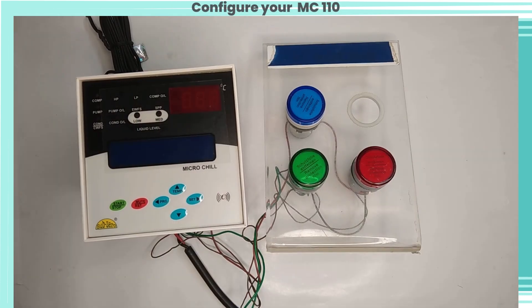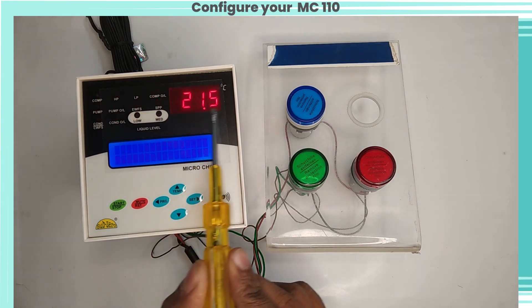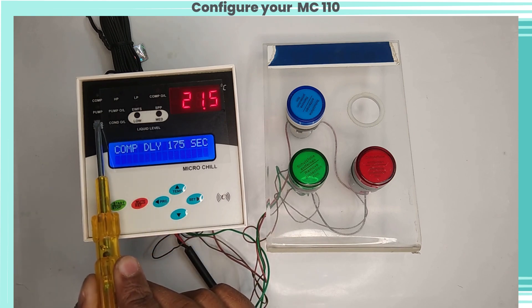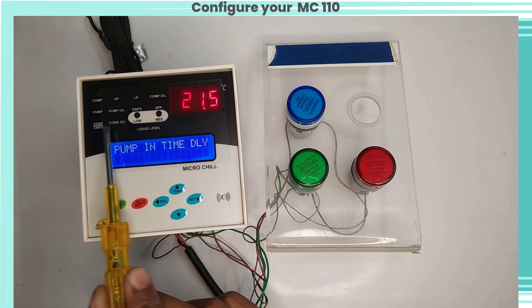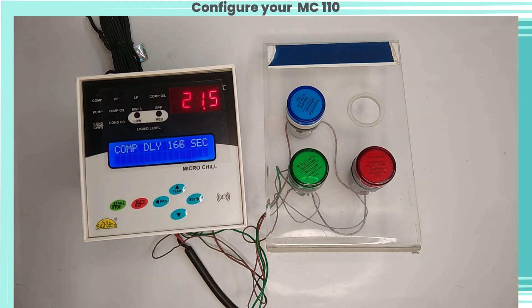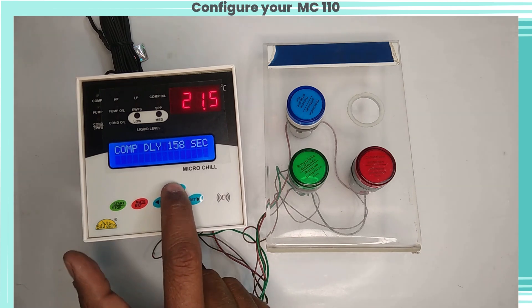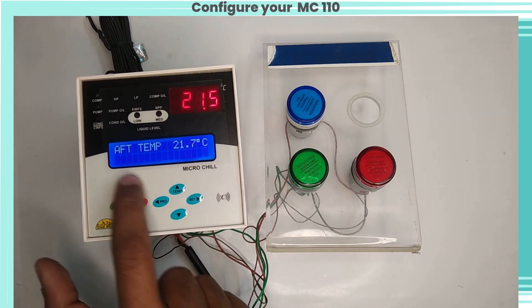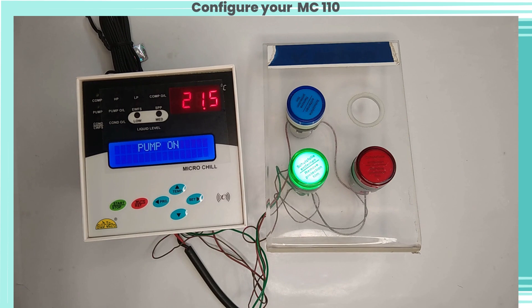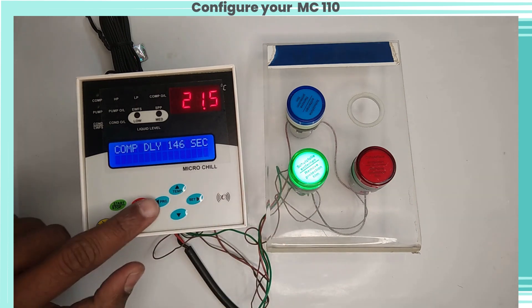So now let's see configuration of your MC 110. Let's give power supply and turn on the device. Here we can see room temperature is showing. Also, on the front side we have all the parameter indicators. One buzzer indicator is also available in this device.